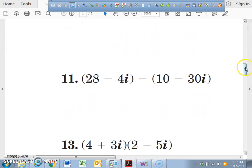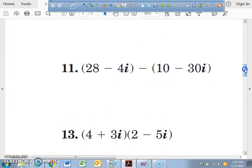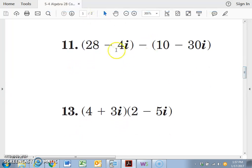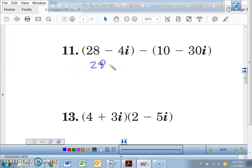Okay. By the way, number eleven is just like number nine. I'm not going to finish this problem, but just so you guys know, it's going to be twenty-eight minus four i, but you're going to have to distribute a negative to both numbers. You better make that a negative ten and a positive thirty i, and I'll let you guys simplify that on your own.